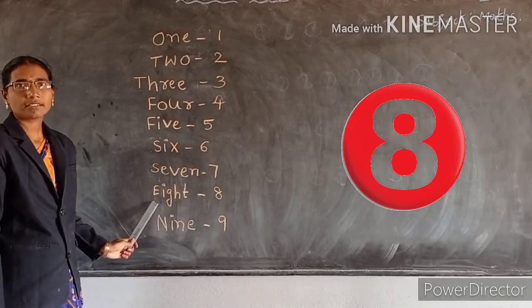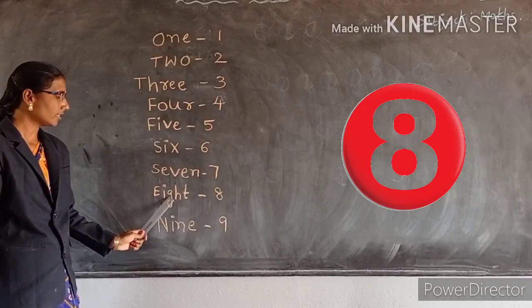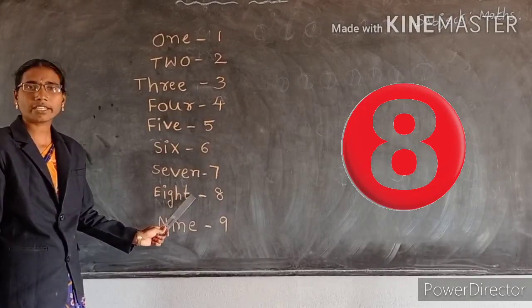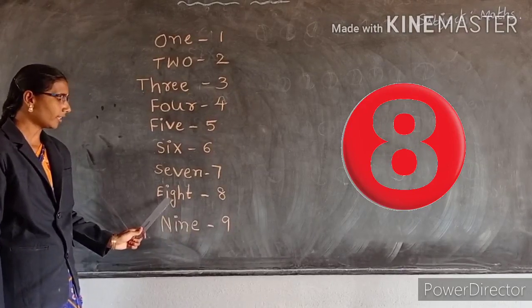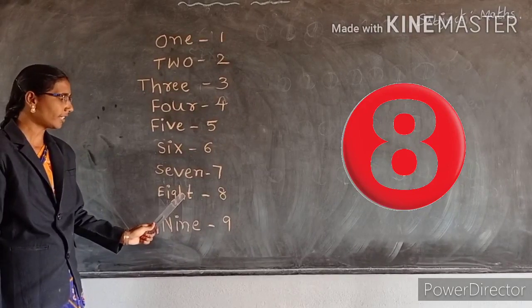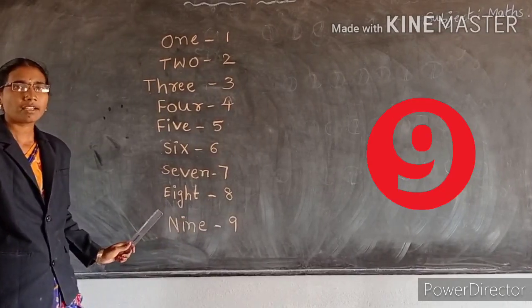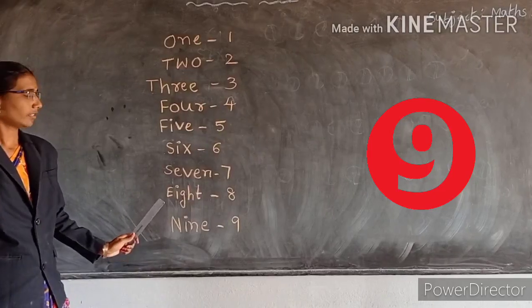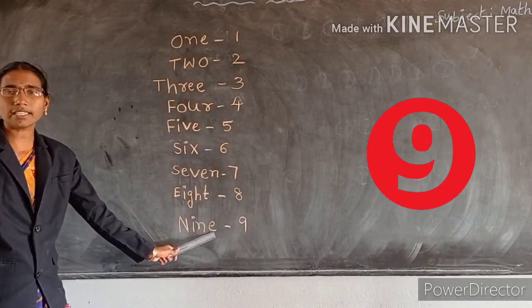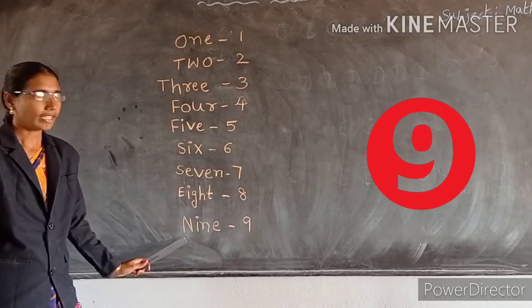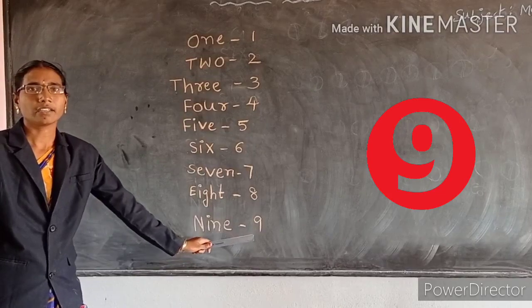Seven after number. Eight. E, I, G, H, T. Eight. E, I, G, H, T. Eight. Nine. N, I, N, E. Nine. N, I, N, E. Nine.